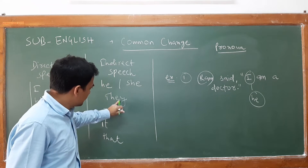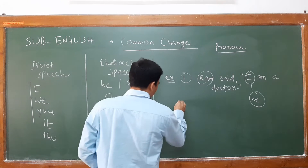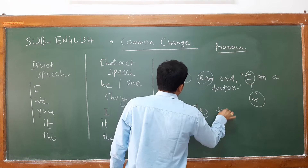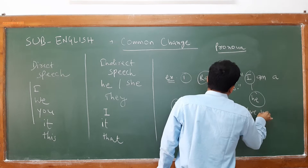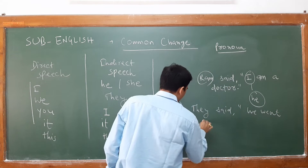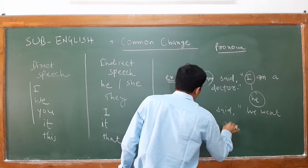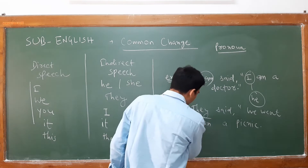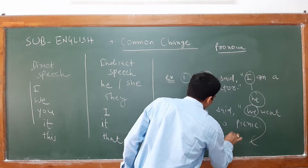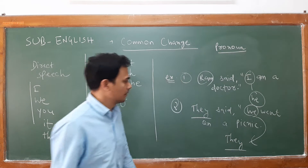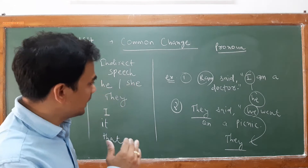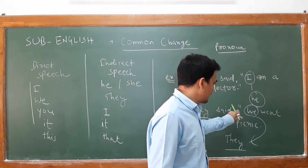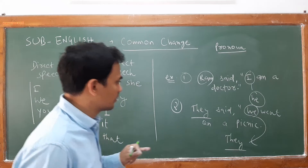Now 'we' — it can change into 'they'. For your example: 'They said, we went on a picnic.' Now this 'we' will change into 'they'. So basically 'we' changes into 'they' in indirect speech. So the answer will become: 'They said that they had gone on a picnic.'